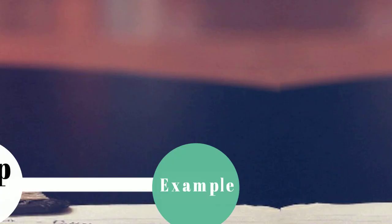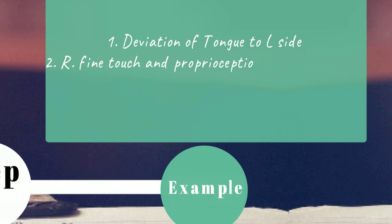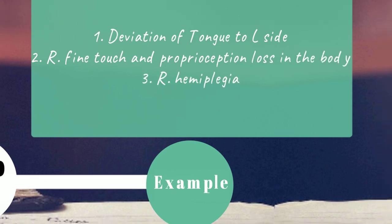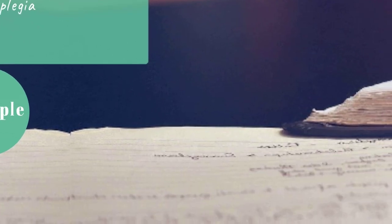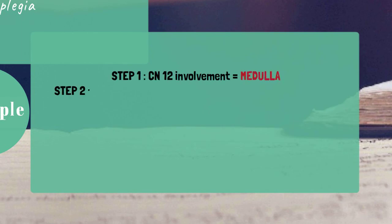Let's bring it all together. Suppose a person has deviation of the tongue to the left side with right-sided fine touch and proprioception loss and right-sided hemiplegia. Where is the lesion? Step 1: As cranial nerve 12 is involved, it is in the medulla.